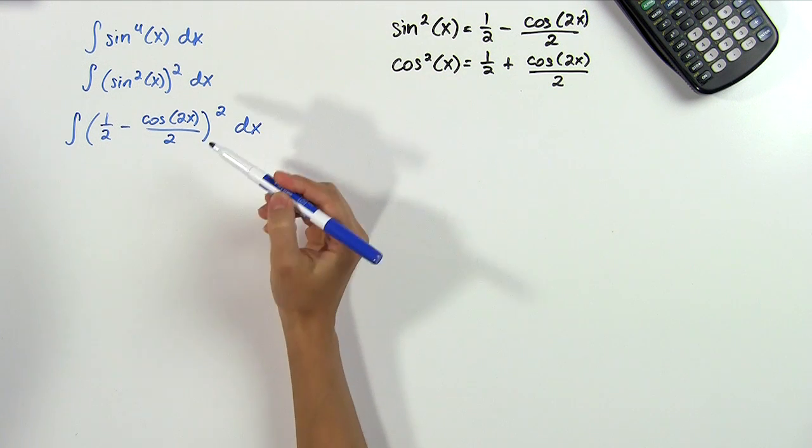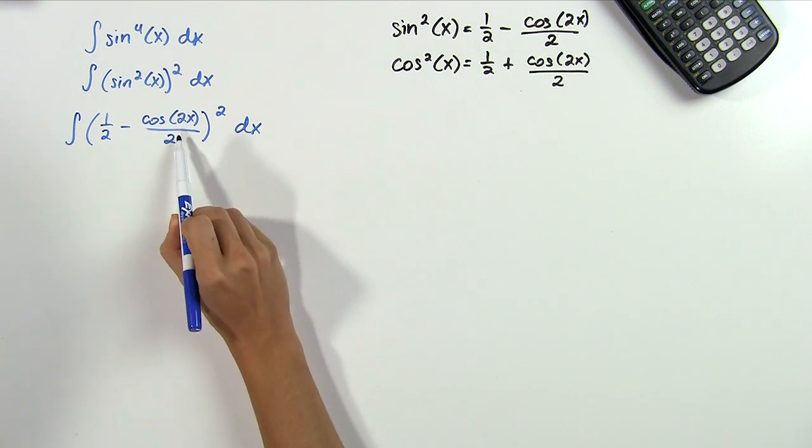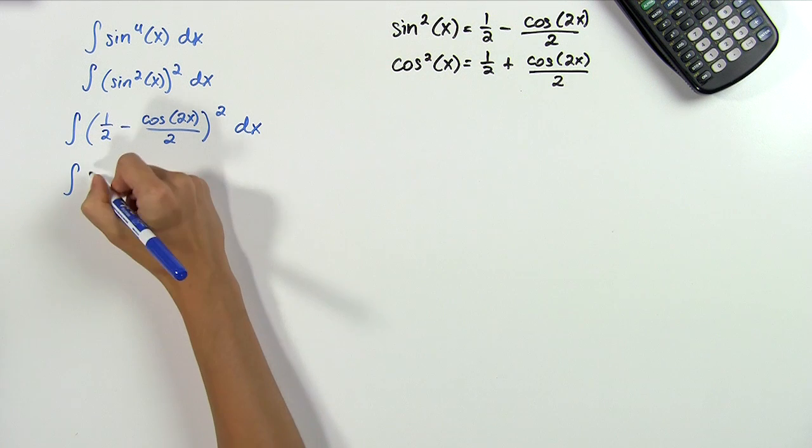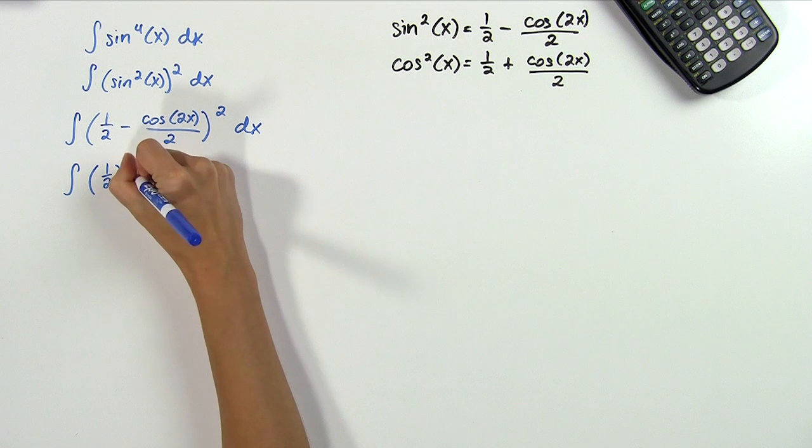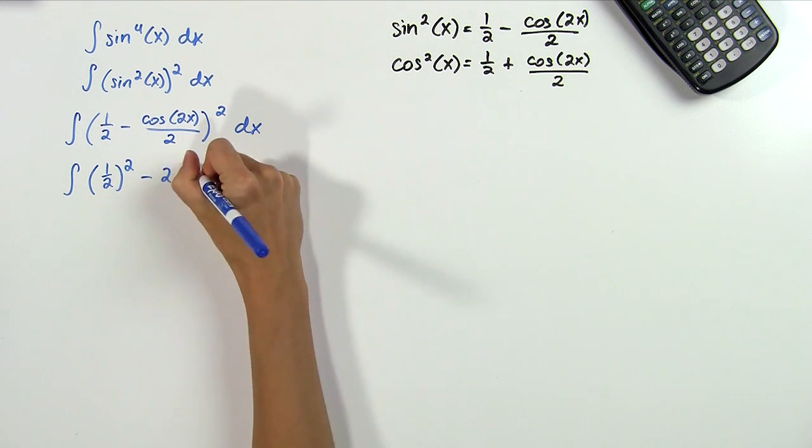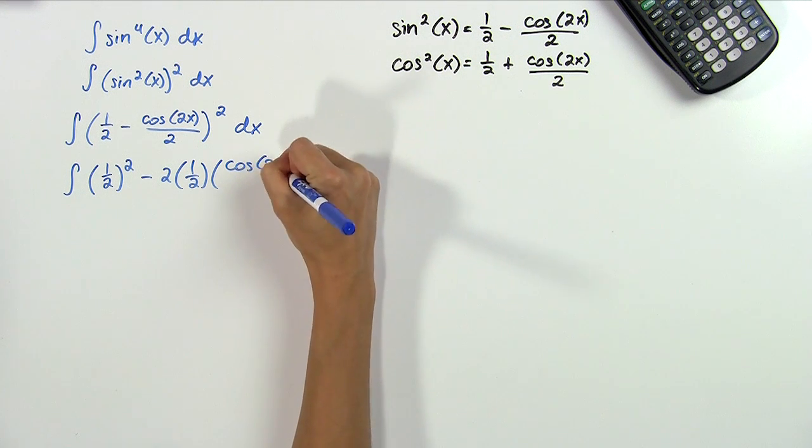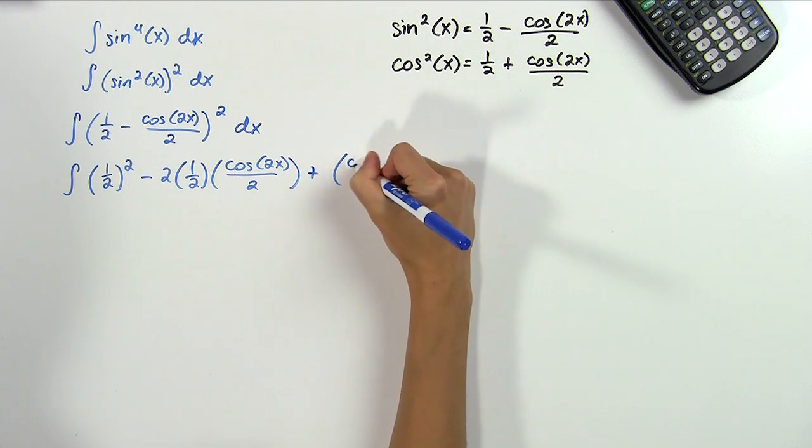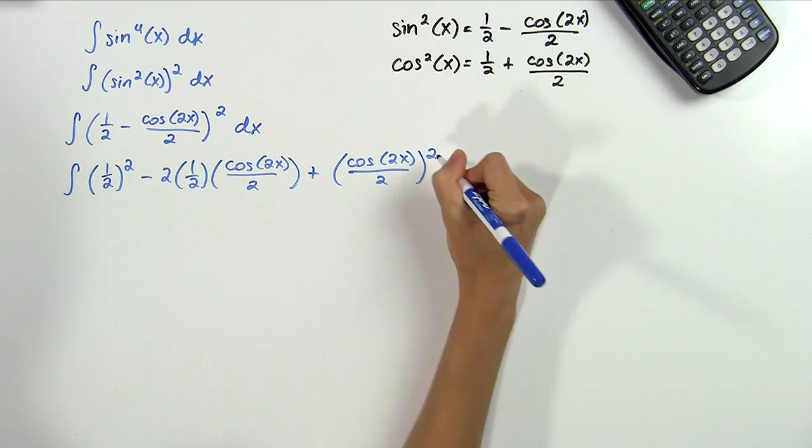Our next step is to expand these parentheses. This may look tough, but just think of this as a minus b squared. And we know we'll get a squared minus 2ab plus b squared when we do that. So what we actually get in this problem is the integral of 1 half squared minus 2 times 1 half times cosine of 2x divided by 2 plus cosine of 2x divided by 2 squared dx.